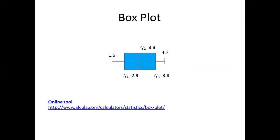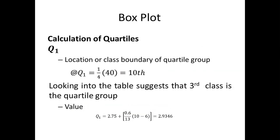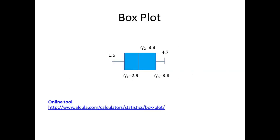The minimum value is 1.6 and the maximum is 4.7. Q1 − min = 2.9 − 1.6 = 1.3, and max − Q3 = 4.7 − 3.8 = 0.9. Since 1.3 > 0.9, the left whisker is longer than the right whisker. In the box plot, it is easily seen that this does not show perfect symmetry of a normal distribution because the Q2 mark is not exactly in the center — it is slightly moved away.